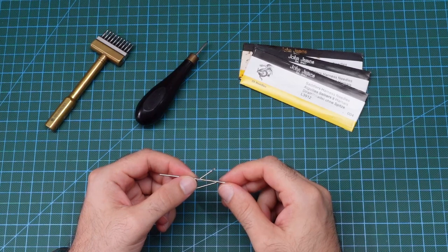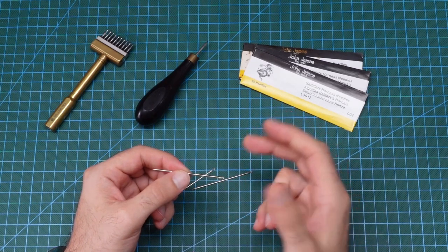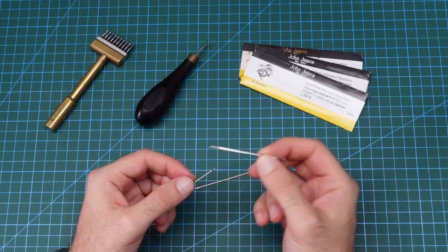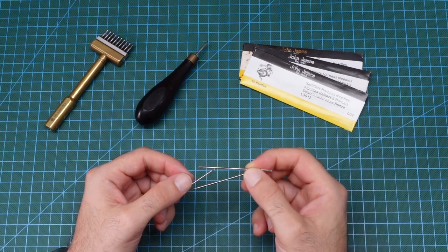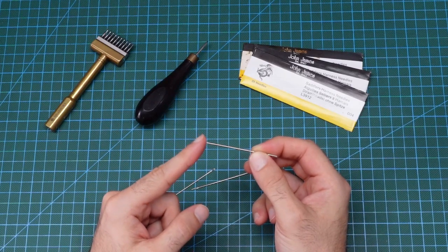So what makes hand stitching needles for leather different from other types of needles? The needles used for hand stitching in leather are called harness needles. These are different from your regular sewing needles as harness needles do not have a point at the very tip.